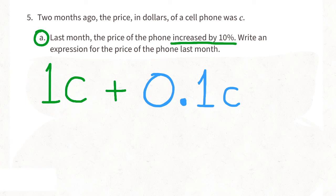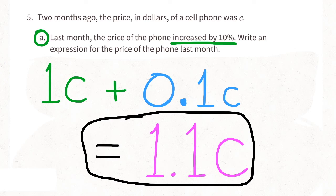So we can start with 1C plus 1 tenth C. The expression that represents the price of the phone after the 10% increase is 1.1C.